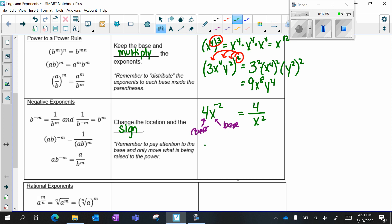If I have something like this, 4x in parentheses to the negative 2, now this entire parentheses is the base. And that would become 1 over 4x squared. And then I would need to simplify. 4 squared is 16, x squared is x squared.